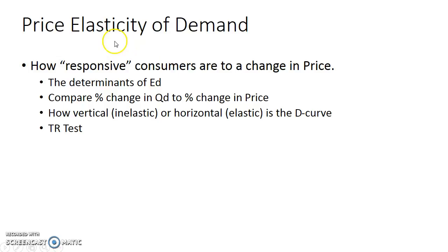Remember when we talked about the price elasticity of demand, we discussed how responsive consumers are to a change in price. You can look at the four determinants of elasticity of demand — substitutability, share of income, whether it's a luxury item (making the good very elastic), necessities versus luxuries (the more you need something, the more inelastic it is), and time — how long it takes to find a substitute. The less time you have, the more elastic the good is.